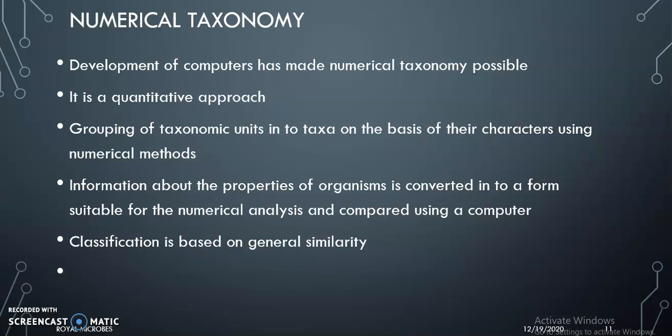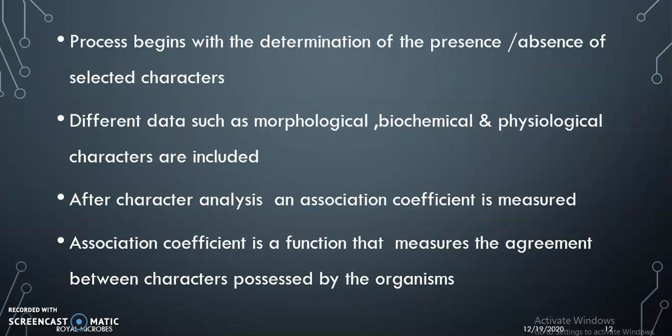Numerical taxonomy was made possible with the development of computers. It is a quantitative approach. Grouping of taxonomic units into taxa is done on the basis of characters using numerical methods. Information about the properties of organisms is converted into a form suitable for numerical analysis and combined using a computer. Classification is based on general similarities. The process begins with the determination of the absence or presence of selected characters, including morphological, biochemical, and physiological characters.